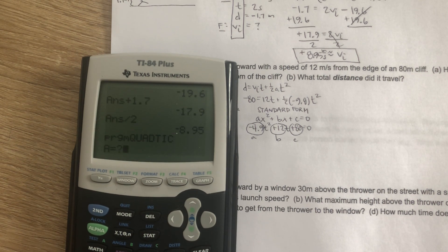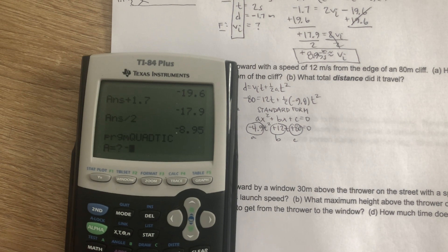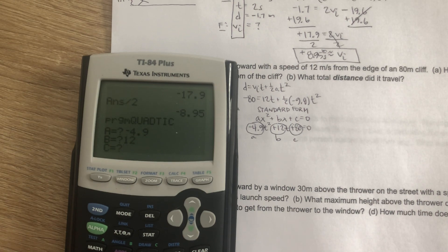Now just enter the A, B, and C values for the quadratic equation you put in standard format. So A equals negative 4.9, B equals 12, and C equals 80. So we're going to get two possible values for time.